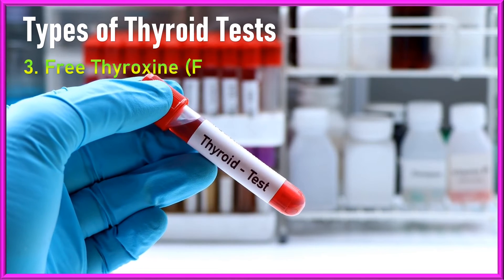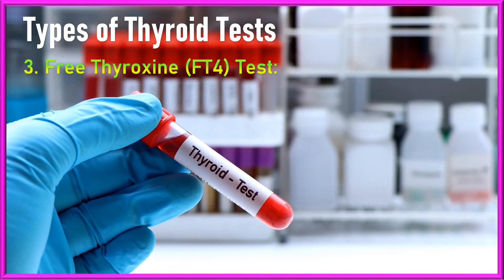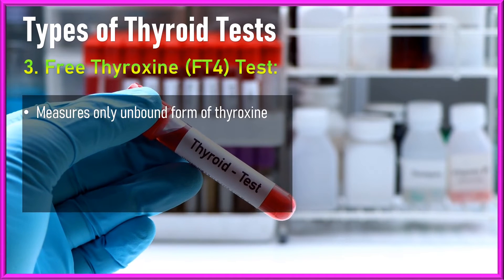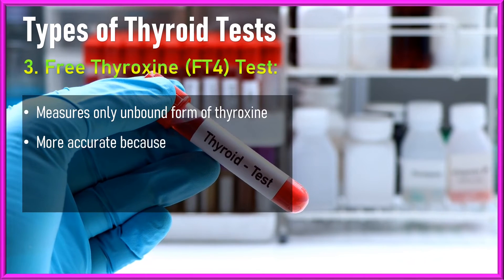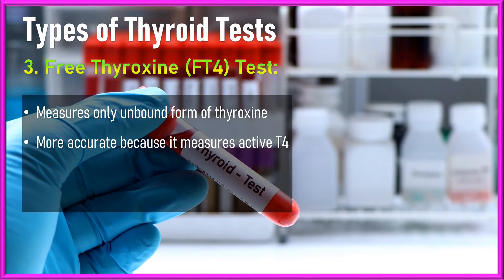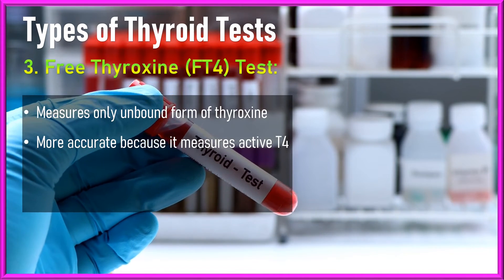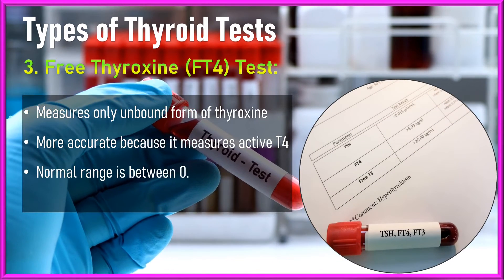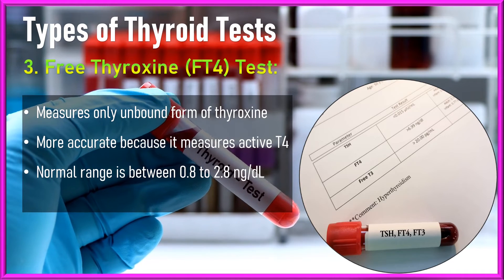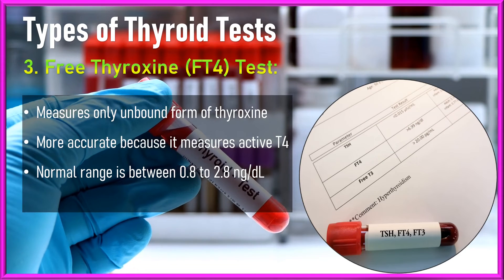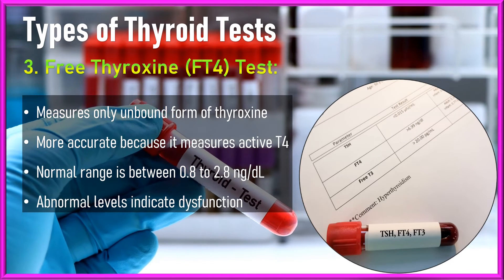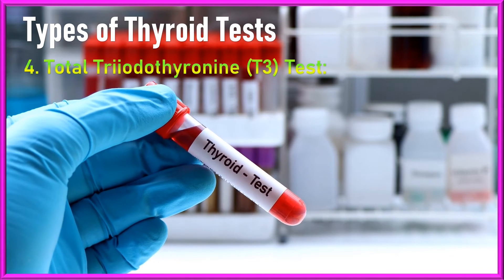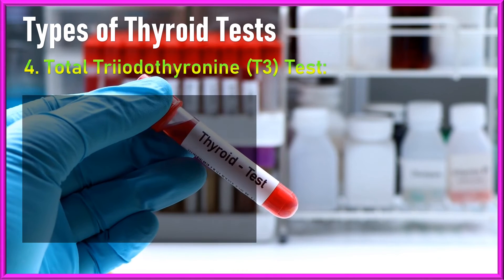Number three, the free thyroxine test, or FT4. Unlike the total T4 test, the FT4 test measures only the unbound form of thyroxine. This test is considered more accurate in assessing thyroid function because it reflects the hormone that is available and active in the body. The normal FT4 range is typically between 0.8 and 2.8 nanograms per deciliter. Abnormal FT4 levels can be indicative of thyroid dysfunction.